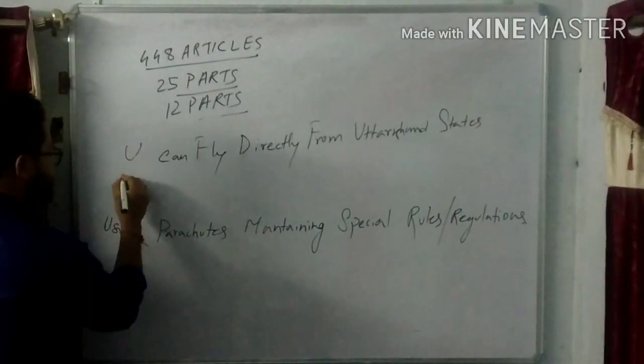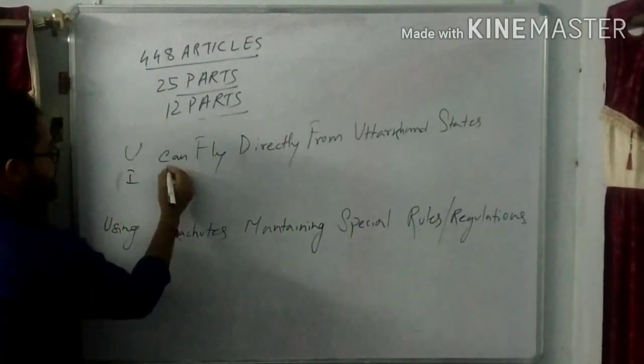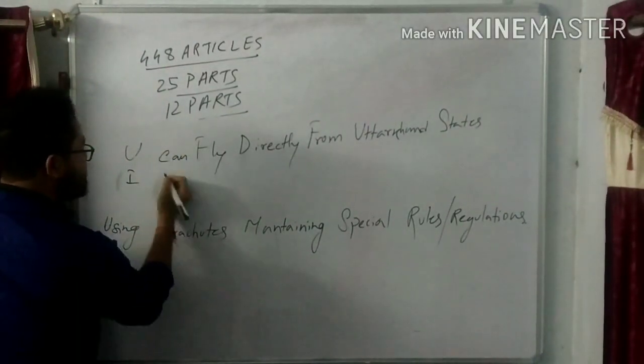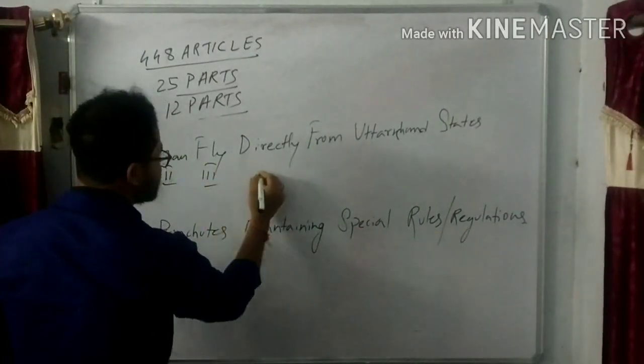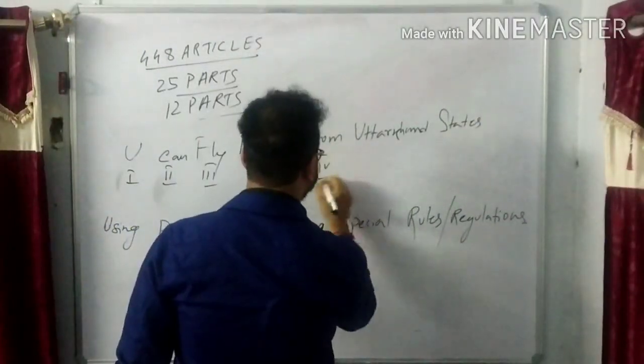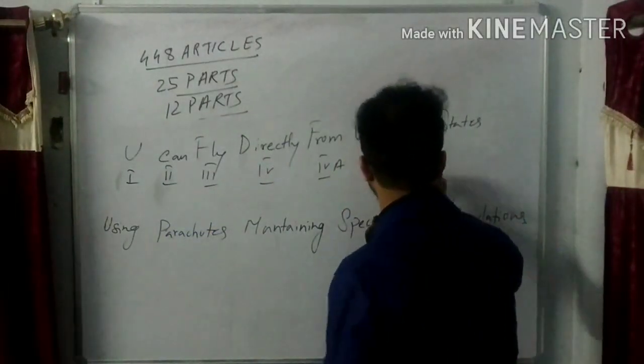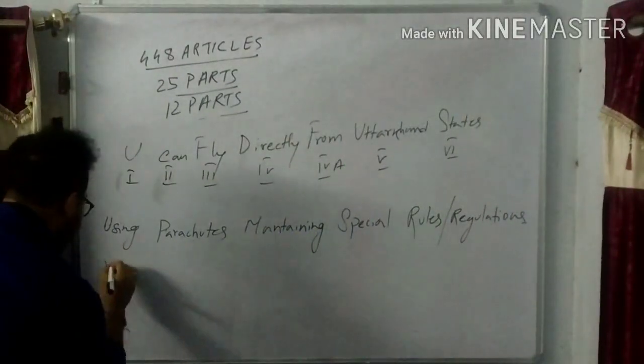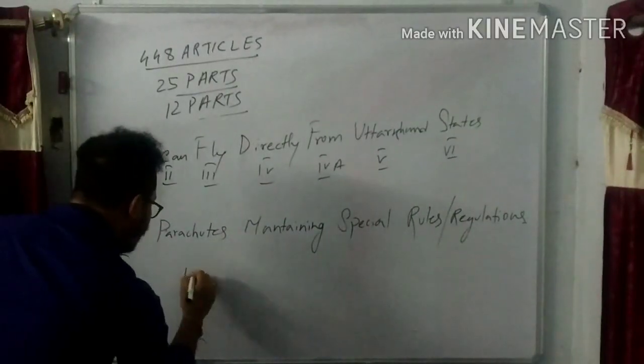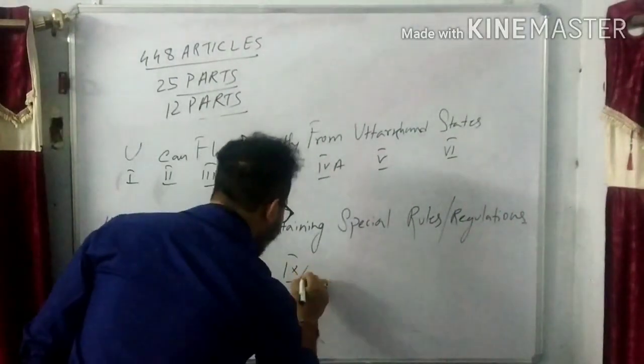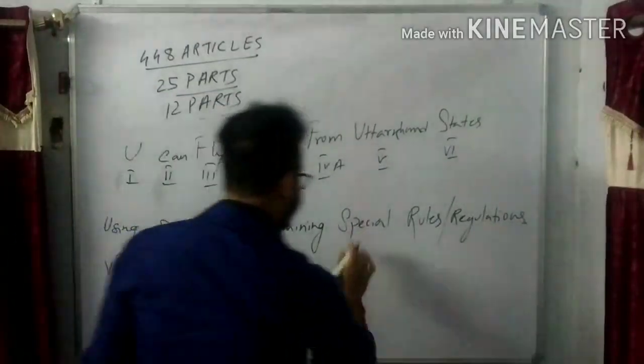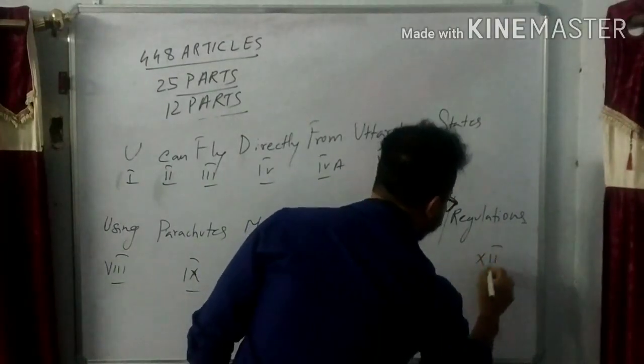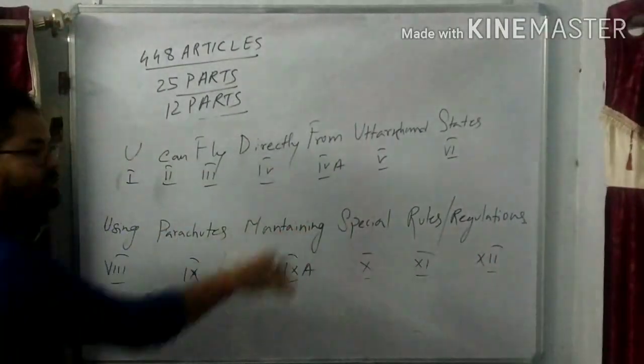You can fly directly from Uttarakhand state using parachutes maintaining special rules and regulations. This sentence will tell you which 12 parts there are and what articles will be covered. Let's see what parts these are: U will be Part 1, C Part 2, F Part 3, D Part 4, F Part 4A, U Part 5, S Part 6, U Part 8, P Part 9, M Part 9A, S Part 10, R Part 11, and Part 12. So you see, these are the 12 parts.